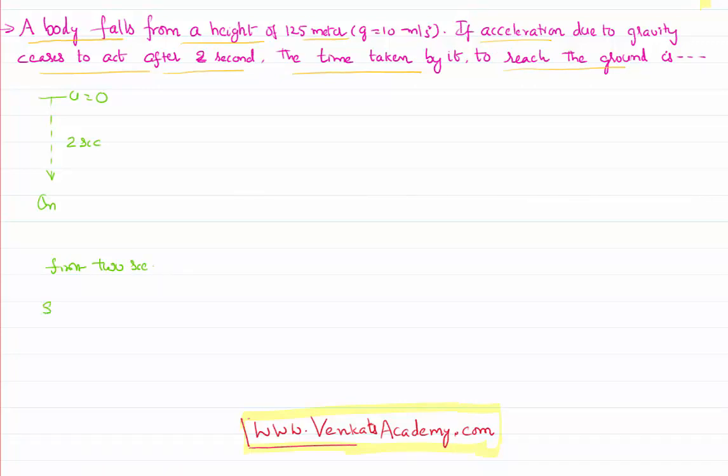It has covered some distance. I can get that value using the formula s equal to ut plus half a t square. That's nothing but half g t square. It is given in the problem that the g value is 10. So, half times 10 times 2 square. That is 40 by 2, that's equal to 20 meters.